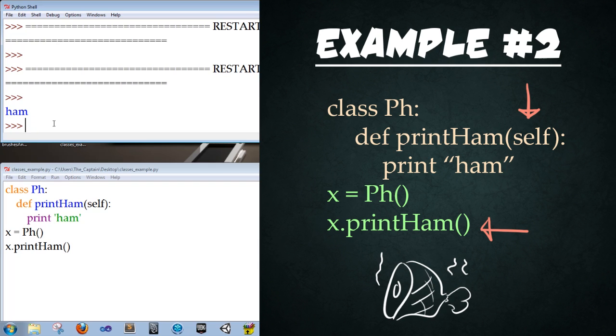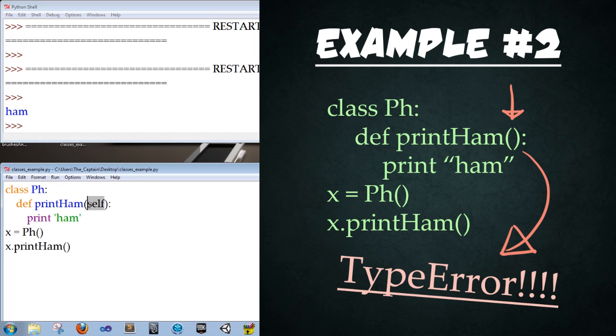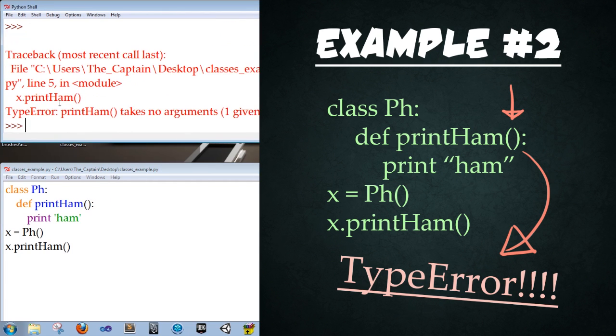So our class example worked great, but what happens if we don't include self? Well, let's go ahead and try that out. We're going to delete self, save, press F5 again to run, and we're going to get a type error and notice what the error says. printHam takes no arguments, but one was given. That one that was given was actually the self that wasn't here. So we can really quickly fix that by typing self back in. So if you ever run into this error, you'll know that you're missing self in there probably.